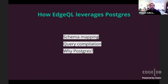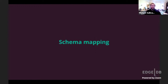I'm going to talk about three main things: how EdgeQL and EdgeDB leverage Postgres. First, schema mapping — how we map our notion of a schema onto a Postgres SQL schema. Second, query compilation — how we take an EdgeQL query and turn it into a Postgres SQL query. Third, why Postgres? Why did we build this on Postgres instead of MySQL, SQL Server, Oracle, Mongo, or something else?